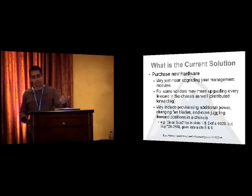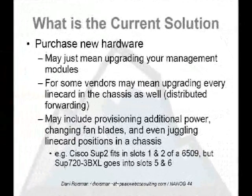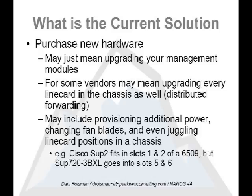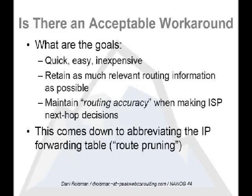The current solution is you buy new hardware. Sometimes you just pull out the old management module and put in the new one if you're doing centralized forwarding. Sometimes you've got to upgrade every single line card in your chassis for distributed forwarding. And in real world cases we've run into: you can replace the management module, but the new modules fit in different slots; oh, and you need higher-speed fan cards; oh, and you have to go to 208 volt because you need more wattage and swap out your power supplies too; and that fan card is blocked by a bunch of Ethernet cables you can't swap without unplugging half your cables. So we run into these problems — is there an acceptable workaround, something to buy you time? This is not a permanent fix, but can we buy you some time? It's got to be quick, easy, and inexpensive. You need to retain as much relevant routing information as possible for traffic engineering and statistics.